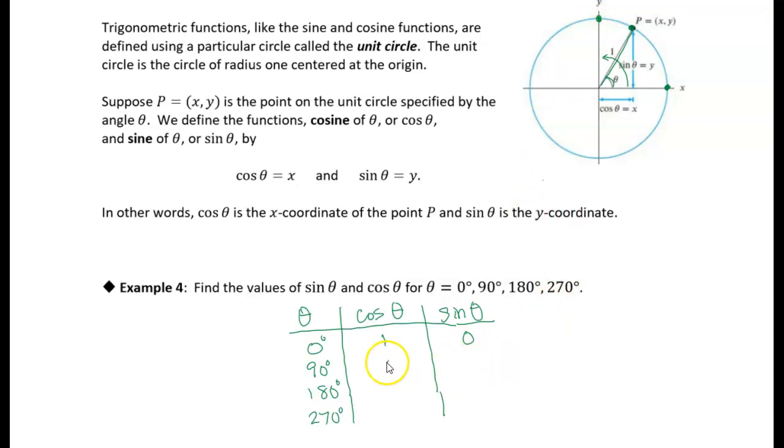So this is the point 0, 1, right? x is 0, y is 1, which means that the cosine of 90 degrees is 0, and the sine of 90 degrees is 1. All right,